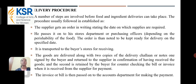Delivery Procedure: A number of steps are involved before food and ingredient delivery can take place. The procedure usually followed is: The supplier gets an order in writing stating the date on which supplies are required. He passes it on to his store department or purchasing officer. The order is noted to be kept ready for delivery on the specified date. It is transported to the buyer's stores for receiving. The goods are delivered along with two copies of the delivery challan or notes. One copy is signed by the buyer and returned to the supplier as confirmation of having received the goods, and the second is retained by the buyer for counter-checking the bill or invoice when received from the supplier for payment. The invoice or bill is then passed on to the accounts department for making the payment.